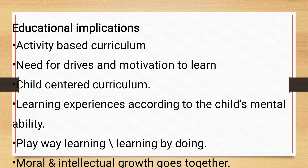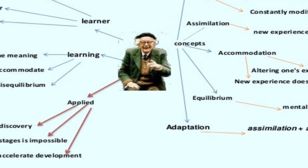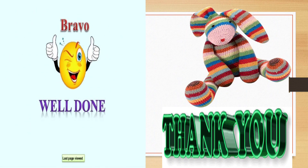We should provide drives and motivation to learn in the classroom, offer a child-centered curriculum to develop cognitive structures, and ensure learning experiences match the child's mental ability. Encourage play-way learning and learning by doing. This develops moral and intellectual growth together. Piaget says that if you follow this approach, schemas will be modified through assimilation, making the learner a good scientist, inventor, or active learner. It promotes self-learning and helps the teacher enhance children based on their learning behavior. I hope you have understood about Piaget's theory of learning. Thank you for watching.